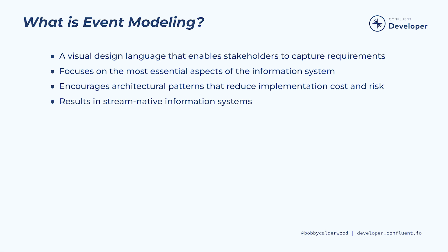So what is event modeling? Simply put, it is a visual design language and methodology for capturing the blueprint for a business information system. A blueprint is an especially apt metaphor for an event model, since like any good blueprint for a building, event modeling: 1. is a visual design language that enables all stakeholders to visualize the problem and capture specific requirements for its solution; 2. focuses on the most essential aspects of the system, leaving non-essential decisions to the implementers; 3. encourages architectural patterns that reduce implementation cost and risk; 4. results in a finished product that provides value to its users and seamlessly integrates into its surrounding environment.